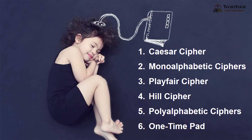These are the 6 types of substitution techniques given in your textbook: Caesar Cipher, Mono Alphabetic Ciphers, Playfair Cipher, Hill Cipher, Poly Alphabetic Ciphers, and One Time Pad.